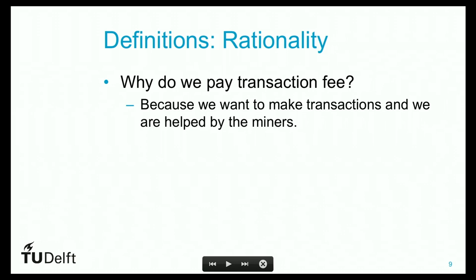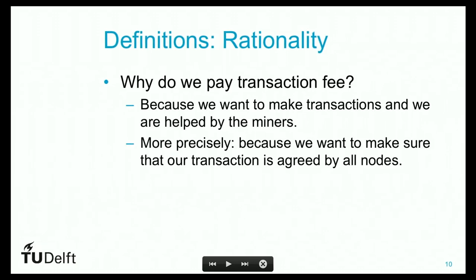But why do we need Visa in the first place? Because we want Visa to make sure the transaction is confirmed. David doesn't trust me — if I say I send you some money, he wouldn't trust me. But he and I and many people in the world trust Visa. So when Visa says this transaction is confirmed, David knows he can securely use this money. We need Visa to help confirm the transaction. But the key question here is: why am I paying the transaction fee instead of David paying it?